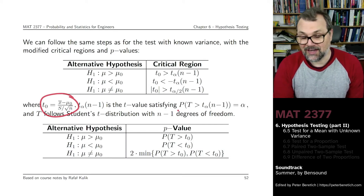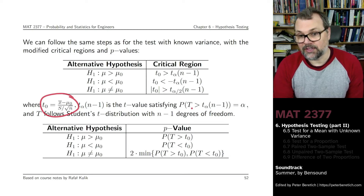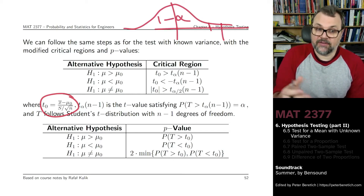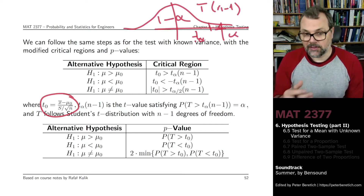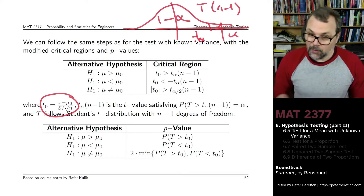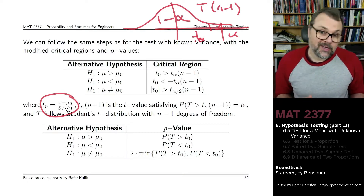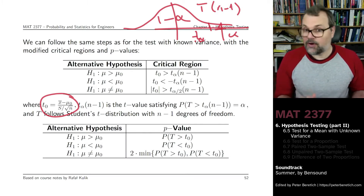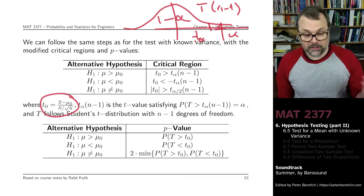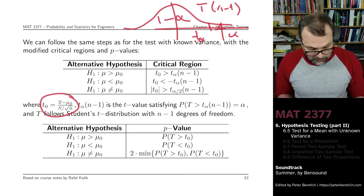t-alpha, n minus one is the t-value that satisfies that the probability of your Student t-distribution being greater than this value is equal to alpha, assuming that t follows a Student t-distribution with n minus one degrees of freedom. The p-values that you compute, you're not computing them from the standard normal distribution — you're computing them from the corresponding t-distribution, again with n minus one degrees of freedom.